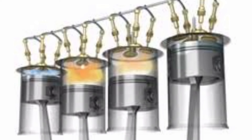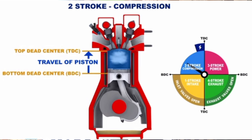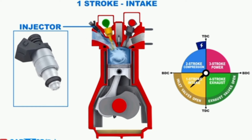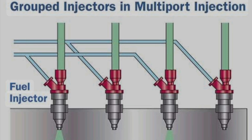The movement of the piston ensures that when the piston is at TDC, the intake and exhaust valves must remain closed. But when the piston is moving downward, it ensures that the intake valve is open. So the movement of the piston is synchronized with the intake and exhaust valves, and also with the injectors. The injector injects when the piston is at TDC.